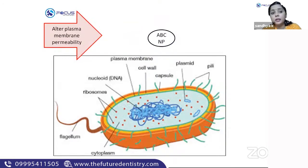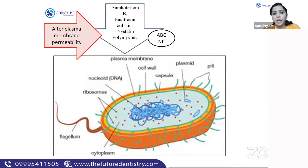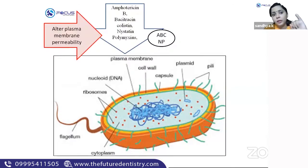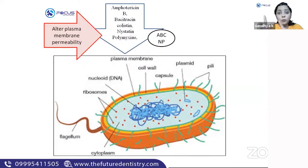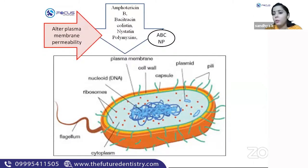The next group: antibiotics which alter plasma membrane permeability of the bacteria. The antibiotics under this group are amphotericin B, bacitracin, colistin, nystatin, and polymyxin — ABC-NP. So BPC-CV inhibits cell wall synthesis, and ABC-NP alters plasma membrane permeability.